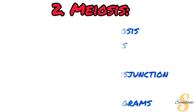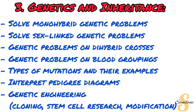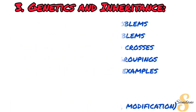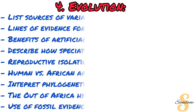The third topic on your scope is Genetics and Inheritance. You need to be able to solve monohybrid genetic problems, solve sex-linked genetic problems, then get to genetic problems on dihybrid crosses, then genetic problems on blood grouping, do types of mutations and their examples, interpret pedigree diagrams, and end with genetic engineering — that is cloning, stem cell research, as well as genetic modification.